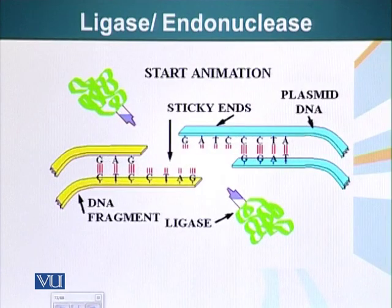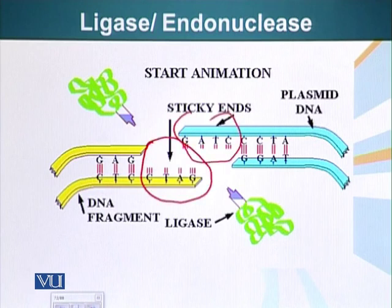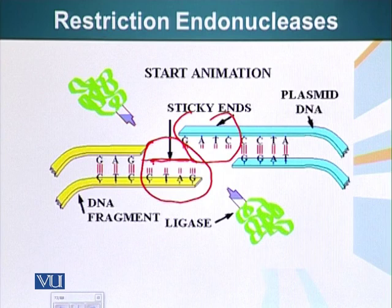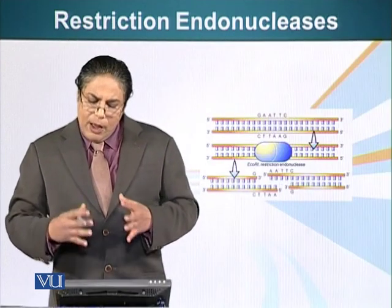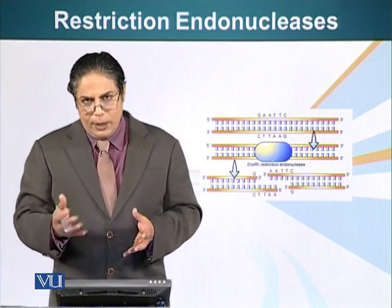When these enzymes cut DNA at palindromic sequences, some of them can generate sticky ends. These enzymes cut DNA leaving single-stranded DNA regions where the bases are exposed, and these bases have the ability to form hydrogen bonding with complementary nucleotides — a fragment of DNA with complementary nucleotides. We will see how endonucleases can be exploited in the field of biotechnology in a later module.